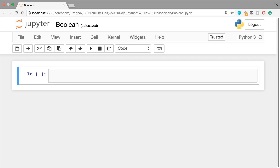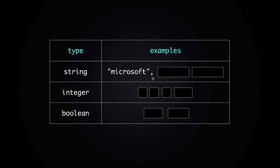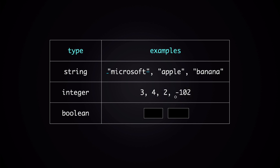Hey everyone. I talked about using boolean in Python in a few of my previous videos, but I decided to make a whole new video about it because it's an important topic. Boolean is just a type of data, just like strings and integers. Examples of a string might be something like Microsoft, Apple, and Banana — usually strings in Python are enclosed in either double quotes or single quotes. Examples of an integer might be something like 3, 4, 2, and minus 102.